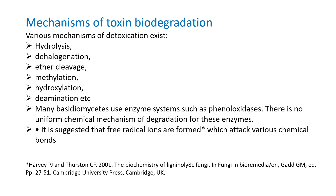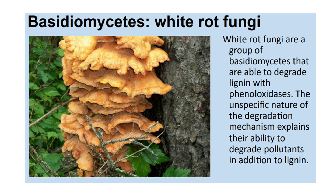The mechanisms used by fungi for toxin biodegradation include hydrolysis, dehalogenation, ether cleavage, methylation, hydroxylation, and deamination. Many Basidiomycetes use enzymes such as phenoloxidases. There is no uniform chemical mechanism fully known yet, but it is suggested that free radical ions formed by these enzymes attack various chemical bonds to degrade them. For example, white rot fungi are Basidiomycetes able to degrade lignin with phenoloxidases, and the unspecific nature of this mechanism explains their ability to degrade pollutants in addition to lignin.